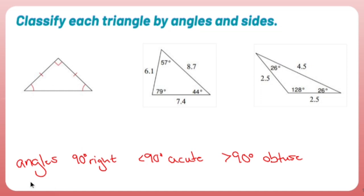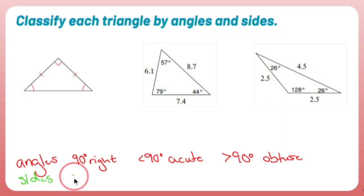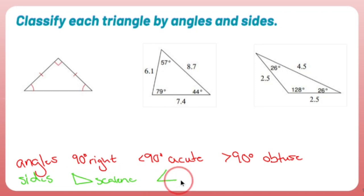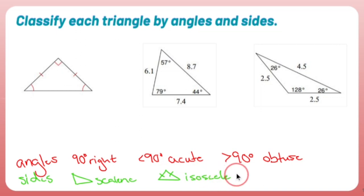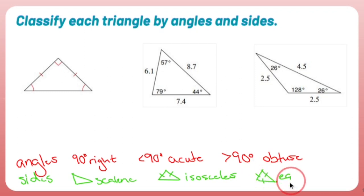If I wanted to name triangles based off of the sides, if all three sides are different, you're looking at scalene — all three sides are different. If two of the sides are the same, it's isosceles. If all three sides are the same, it's equilateral — for equal sides.